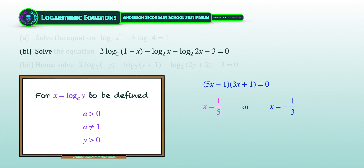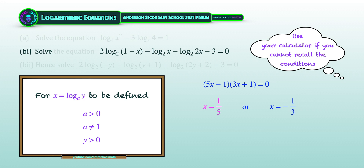For any logarithmic equation x equal to log y to the base of a to be defined, the base a must be greater than 0 and not equal to 1, and y must be positive. We must therefore reject x equal to negative 1 third, because substituting it into the second logarithmic term gives log (negative 1 third) to the base of 2, which is not defined. Thus, the only answer is x equal to 1 over 5.